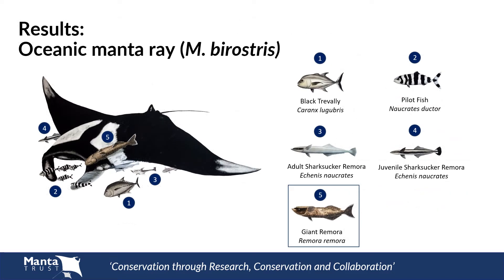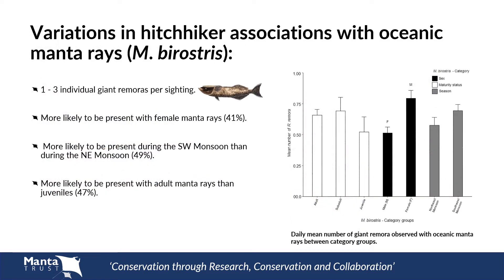For the oceanic manta ray, we identified five different hitchhiker species. Due to the low number of recorded associations with some of these, only the most frequently observed hitchhiker, the giant remora, was investigated further, which was observed during 55% of oceanic manta ray sightings. When present, the number of giant remora associated with oceanic manta rays ranged between one and three individuals per sighting. Giant remora were 41% more likely to be present with female oceanics than with males, and more likely to be present during the southwest monsoon than the northeast monsoon. The model also suggested that giant remoras were most likely to be present with adult oceanic manta rays rather than juveniles.